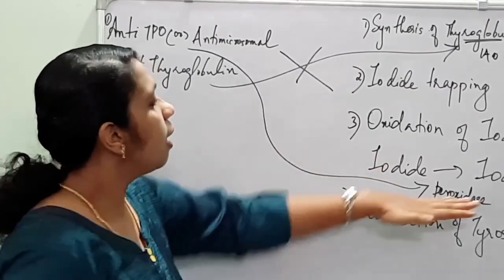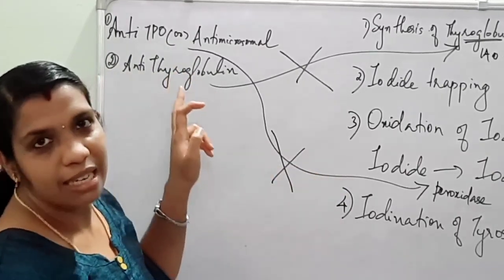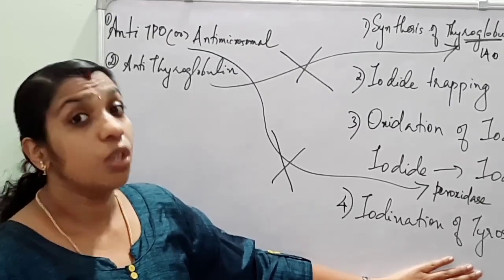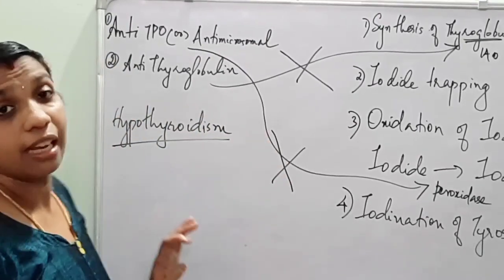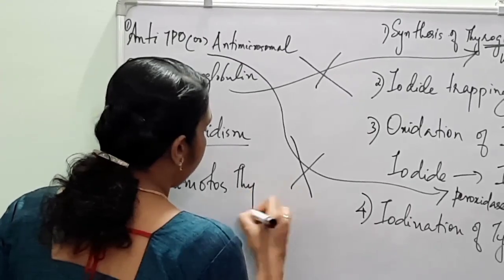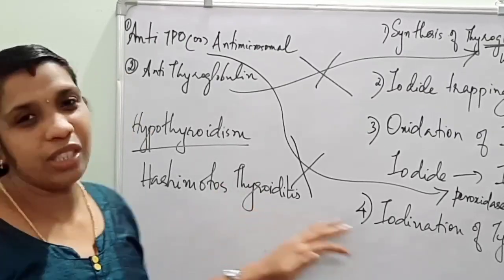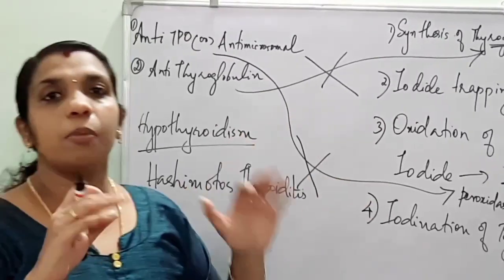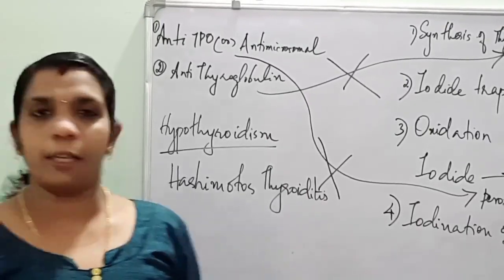So the third step will not get completed due to the presence of this autoantibody, that is anti-TPO or anti-microsomal antibody. As a result, the formation of thyroid hormones is impaired and there will be hypothyroidism. This is the character of Hashimoto's thyroiditis. Both antibodies are present in autoimmune hypothyroidism, that is Hashimoto's thyroiditis. This is the pathology behind why these antibodies cause hypothyroidism.